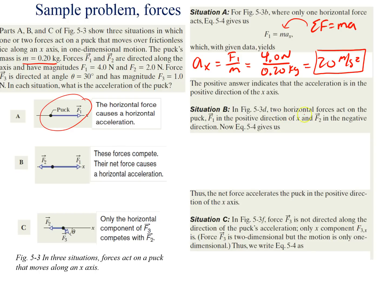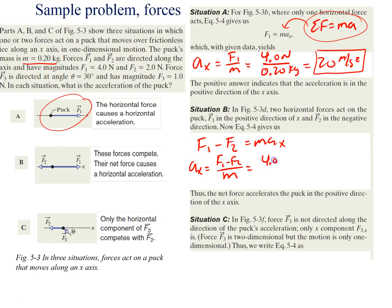In situation B, two horizontal forces act on the puck: F1 in the positive x-direction and F2 in the negative direction. Summing all forces: F1 minus F2 equals mass times x-acceleration. Rearranging for ax: (F1 minus F2) over mass, which is (4.0 newtons minus 2.0 newtons) divided by 0.2 kilograms, equals 10 meters per second squared. It's a positive result, so the object accelerates to the right.